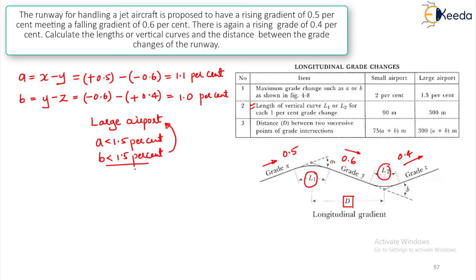After this you will have to calculate the L1, L2 and D. Now, what is L1? Because we have finalized it as large airport, this is how much? 300 meters per degree gradient change. What do you have to do? 300 meters into whatever A value we might have got, the gradient change value that we have to multiply for L1. Because for L1 it is X minus Y, we need to use this value. 300 meters into 1.1, this will give you 330 meters.